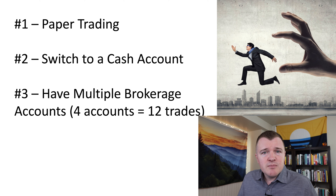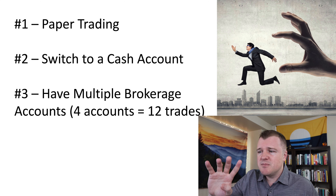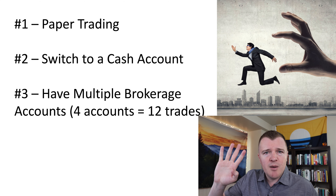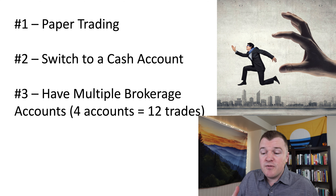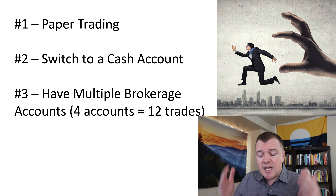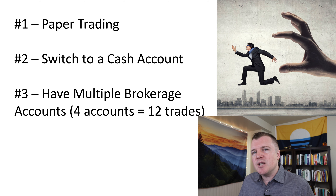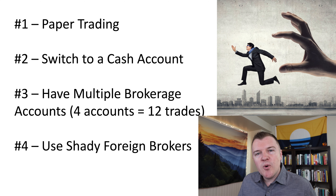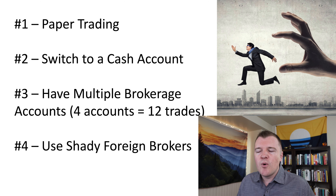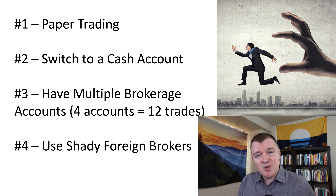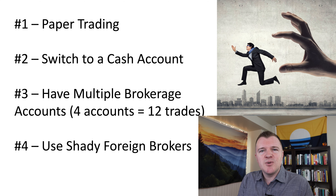Option three is probably the best: just have multiple brokerage accounts. The PDT rule only applies to each individual account. So if you had $20,000 — $5,000 short of the $25,000 minimum — just get four different brokerage accounts, maybe Robinhood, Webull, Schwab, and TD Ameritrade, put $5,000 in each, and day trade three at a time in those accounts. This would give you 12 day trades in a week.